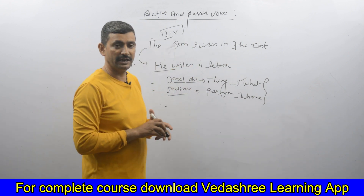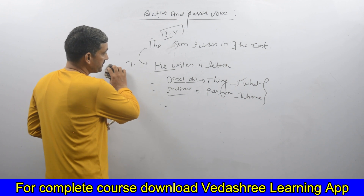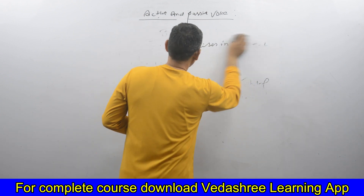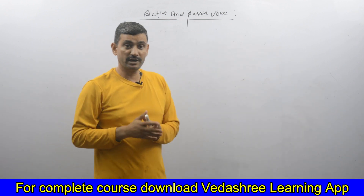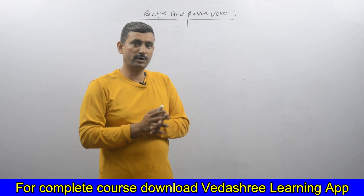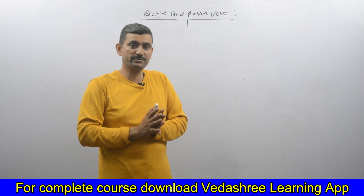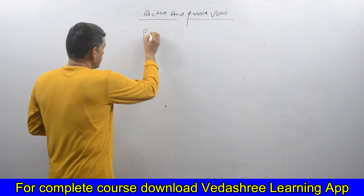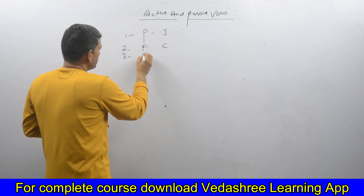So this is how we change active voice to passive voice. Now I will give you details about which sentences will be transferred to passive voice. For active and passive voice, we have eight tenses out of twelve total tenses: present indefinite, present continuous, present perfect, past indefinite, past continuous, past perfect, future indefinite, and future perfect.